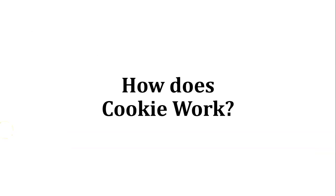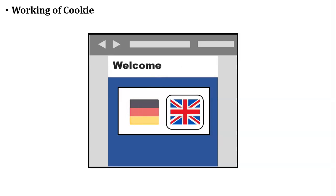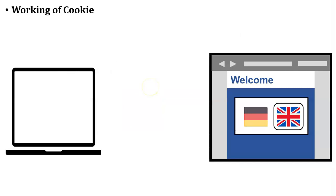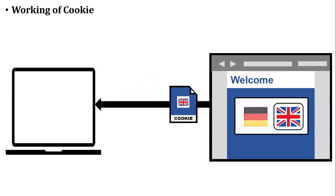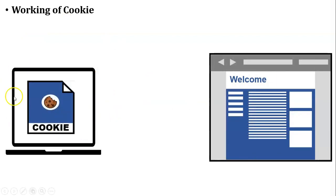How does a cookie work? Let us take one example. There is one user who wants to access a website, but the website's default language is German. The user does not know German, so the user changes the language of that website to English. At that time, the server creates a cookie and sends it to the user's web browser. The cookie stores the language selected by the user — English — and that cookie is stored inside the user's web browser, so the website displays in English.